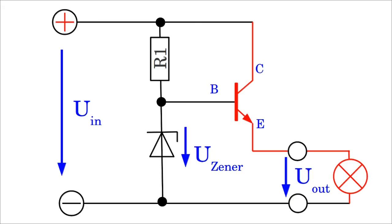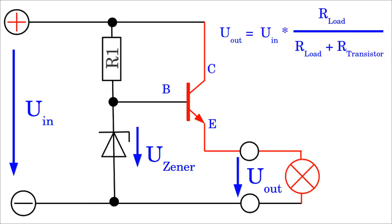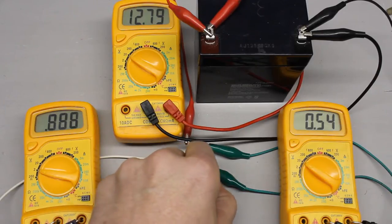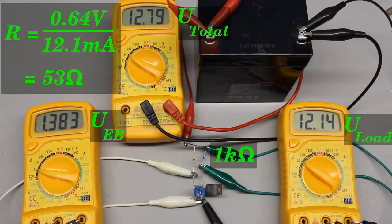As soon as a load is connected to the output clamps of the circuit, the emitter-collector line of the transistor and the load form the second voltage divider of the circuit. If the resistance of the load is constant, the resulting output voltage across the load is caused by the variable resistance of the transistor's emitter-collector line. The resistance of the Darlington transistor used here is above 20kΩ around an emitter-base voltage of approximately 0.7V, while it decreases to just some ohms around a base voltage of 1.4V.